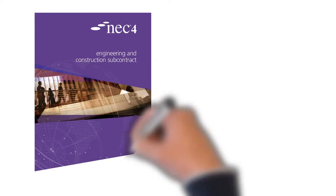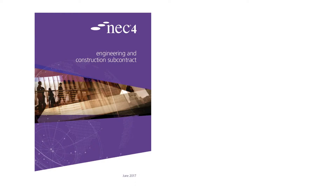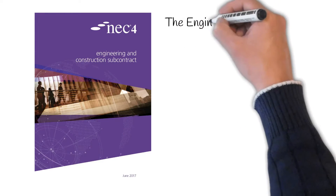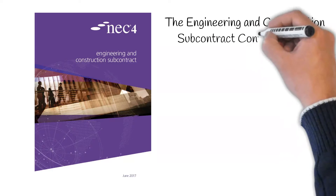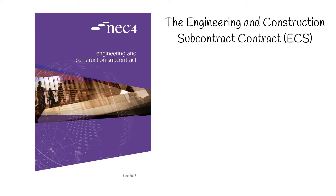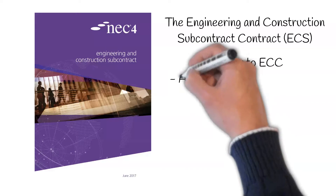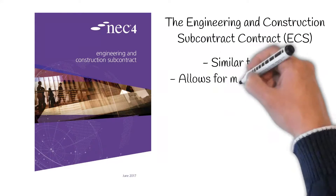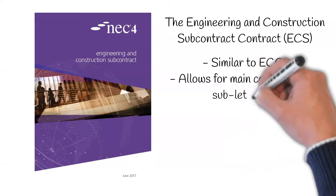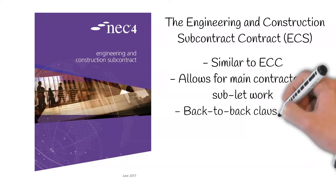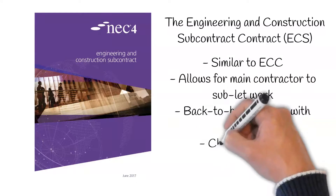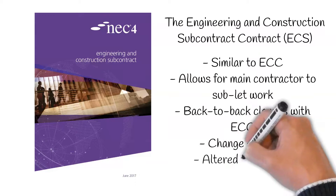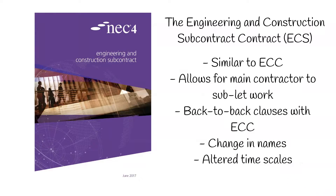The Engineering and Construction Subcontract Contract, or ECS. This contract is very similar to the above. However, it allows for the main contractor to sublet part of the project to a subcontractor. This allows for back-to-back clauses. The only difference is a change in names, i.e. contractor and subcontractor, and the timescales are altered to facilitate the timescales required in the ECC contract.